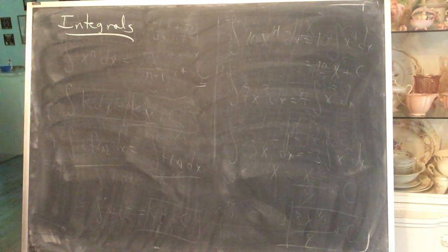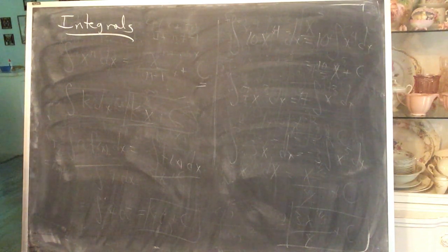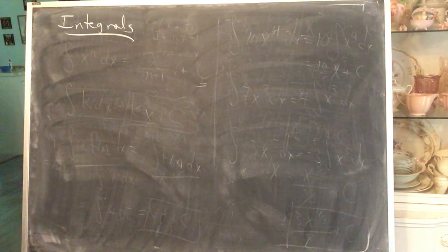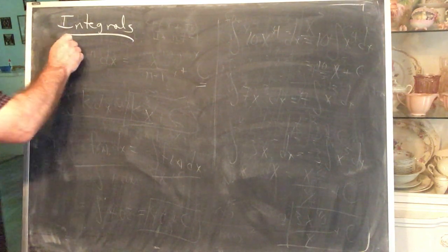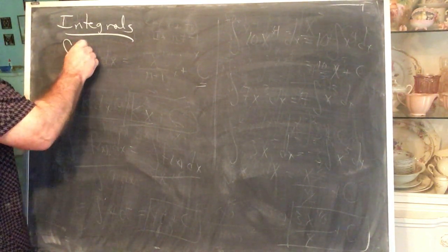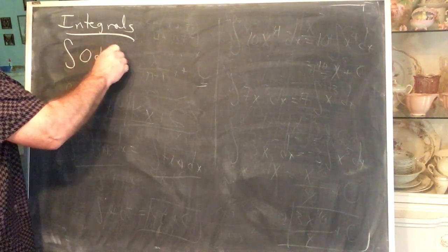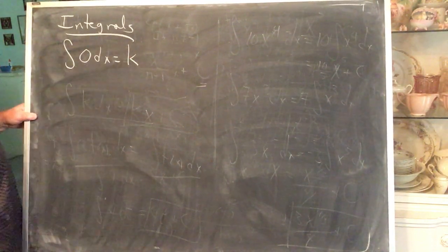We're going to pick up now with our properties of integrals. What is the derivative of a constant? The derivative of a constant is zero, therefore the antiderivative of zero is equal to a constant.